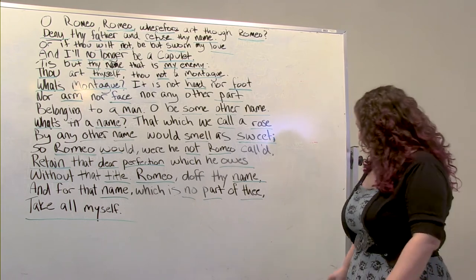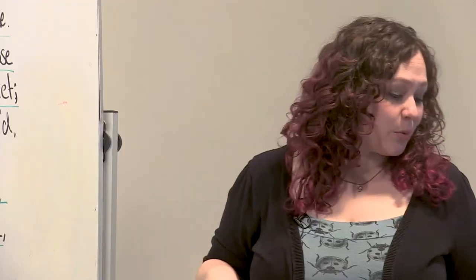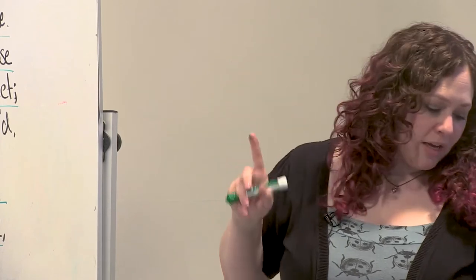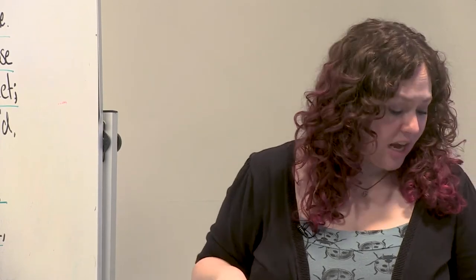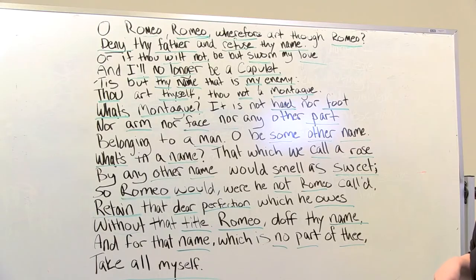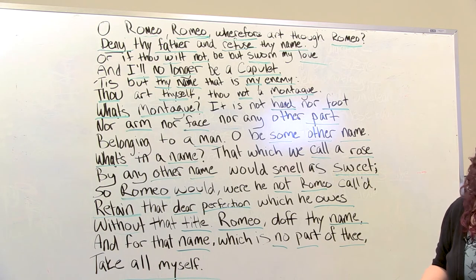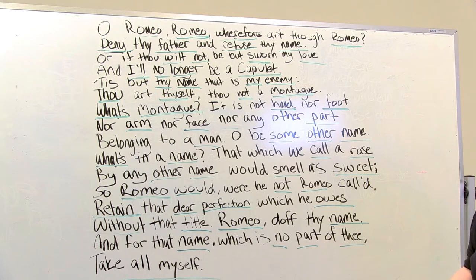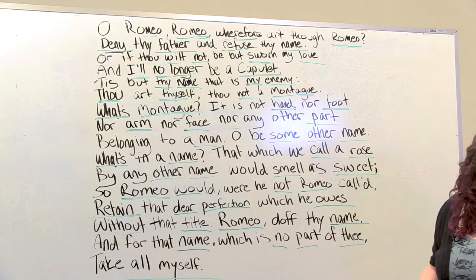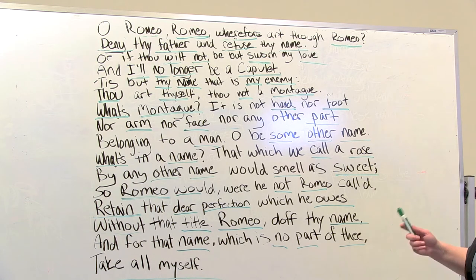Let's see what I did and compare it to what you did. Romeo, Romeo, wherefore Romeo. Deny father, refuse name. Wilt not? Sworn love. I'll no longer Capulet. Thy name, my enemy. Thou thyself, not Montague. What's Montague? Hand, foot, arm, face, nor part. Man — some other name? What's name? That rose other name smells sweet. Romeo would not Romeo. Retain dear perfection owes. Without title, Romeo name. Name no part thee. Take all myself.